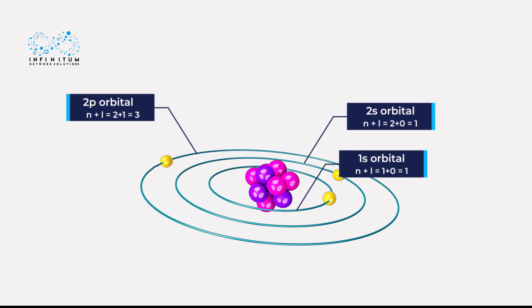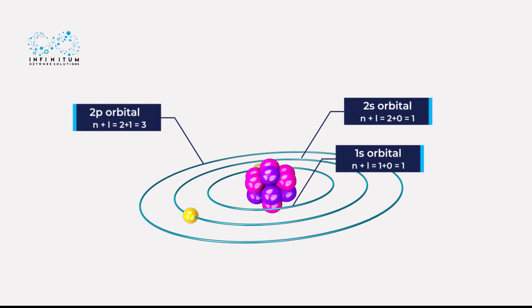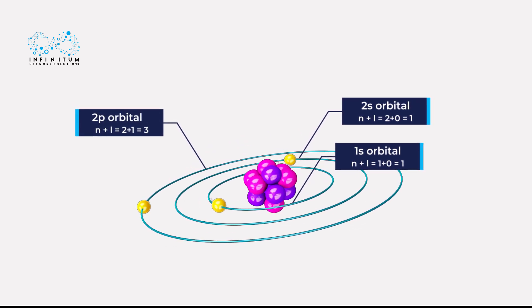However, the orbital having lower n value will be occupied first, in case any two orbitals have the same n plus l value.